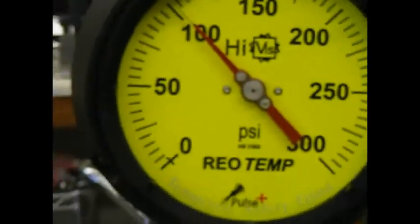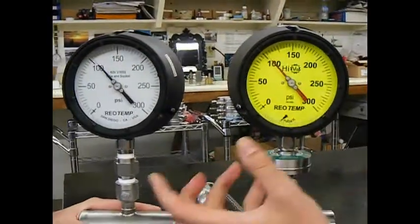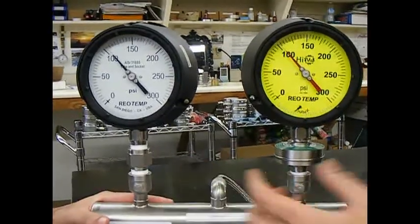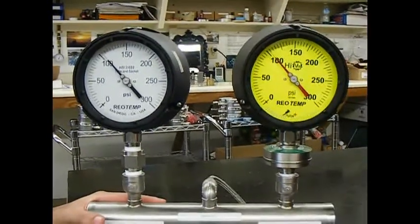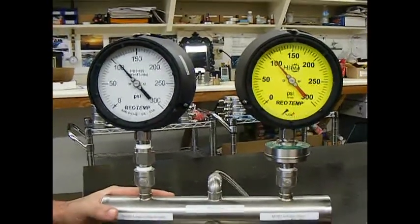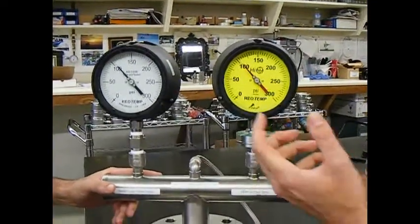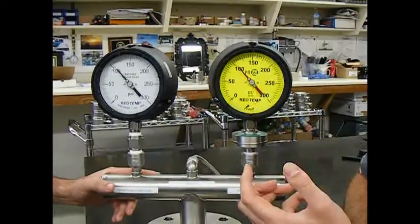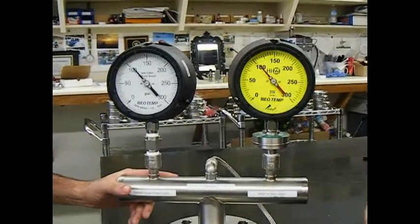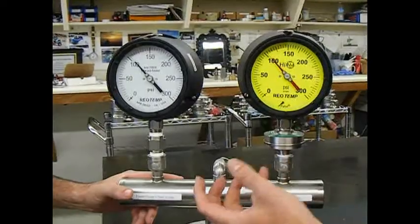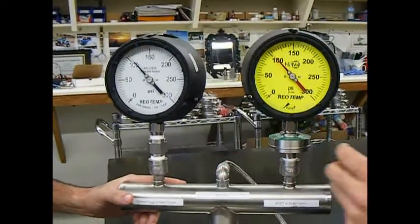What you're seeing here is the unit on the right, which is a standard process gauge with a water snubber. Snubbers are commonly used in the industry to slow down the process before it gets inside the gauge, but as you see here, a water snubber just doesn't do a good enough job in slowing down the process medium before it gets into the gauge.